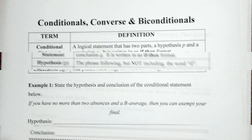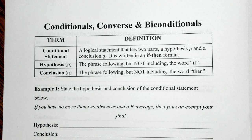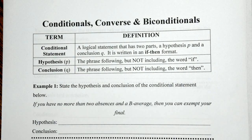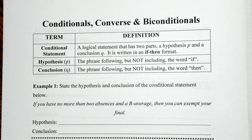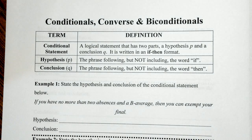In our first unit we talked about validity and counterexamples. We're now going to get into the bulk of this unit with our sentences — we're going to talk about conditionals, converses, and biconditionals. Before we start, I'm going to suggest that you pause and go find yourself two different color highlighters. It's really going to help you see some differences between our different kinds of sentences.